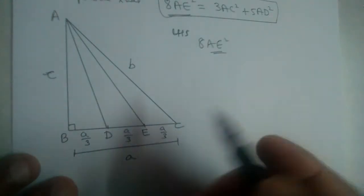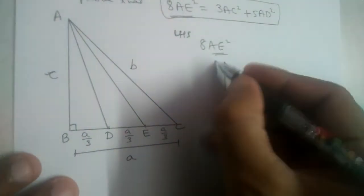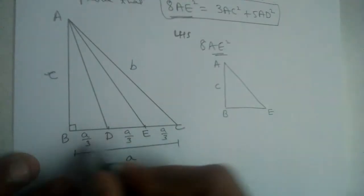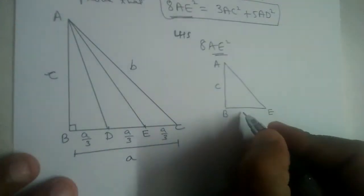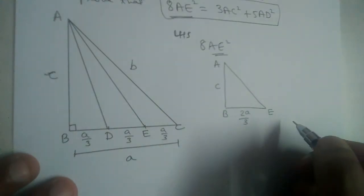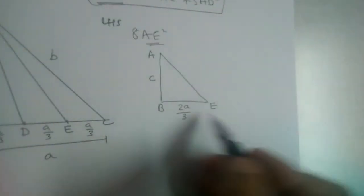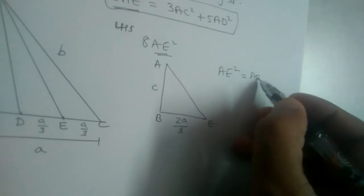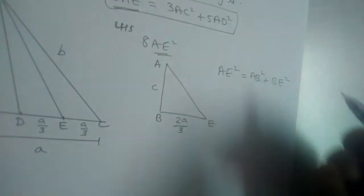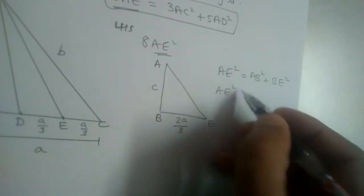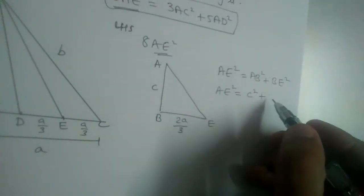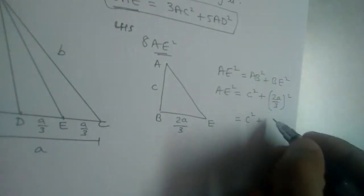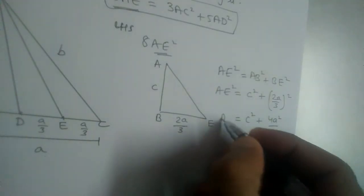AE is in triangle ABE. BE = BD + DE = a/3 + a/3 = 2a/3. Applying Pythagoras theorem to triangle ABE: AE² = AB² + BE². Since AB = c and BE = 2a/3, we get AE² = c² + (2a/3)² = c² + 4a²/9.